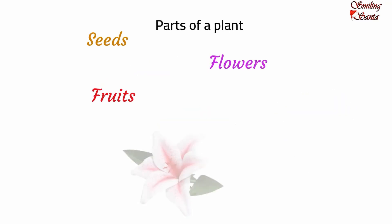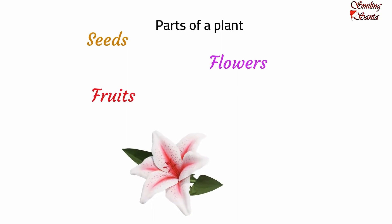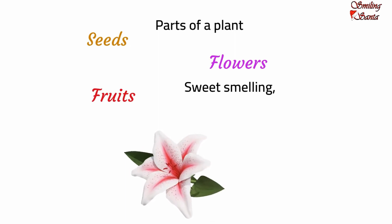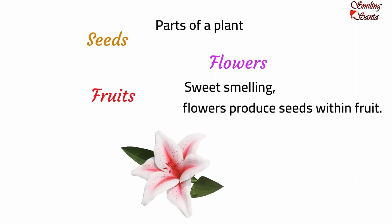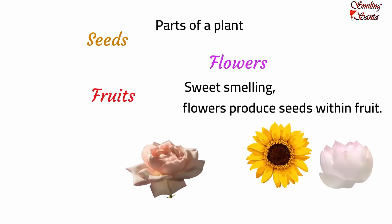Flowers are the most beautiful part of the whole plant. They come in different shapes and sizes — some flowers are big and some are small. Flowers come in various colors too and are usually sweet smelling. Plants produce flowers to reproduce, and flowers produce seeds within fruit. Some of the flowers we like are rose, tulip, sunflower and lotus.